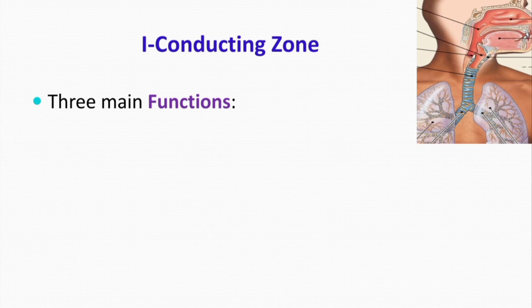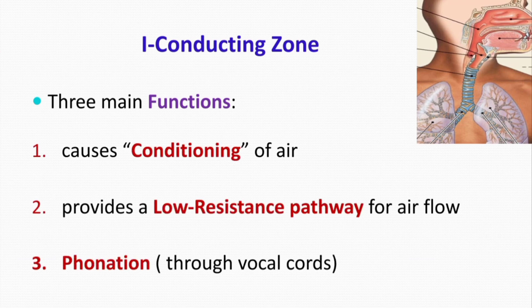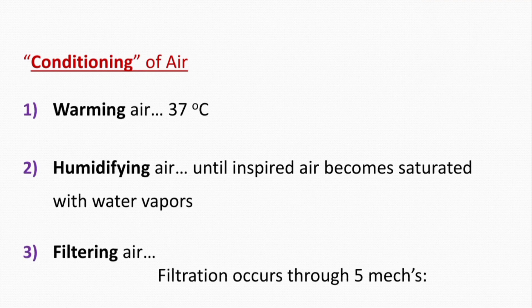The conducting zone performs three main functions. First, it causes conditioning of the air. Second, it provides a low resistance pathway for the flow of air. Third, it serves for phonation — the vocal cords are present in the conducting zone. Conditioning includes three processes: warming of the air to body temperature of about 37°C, humidifying the air so it can be transported and exchanged at the level of the lungs, and filtering the air.